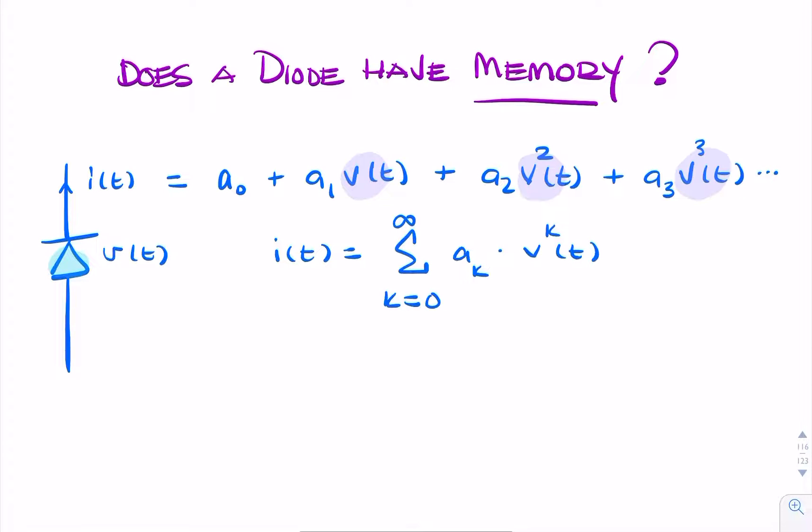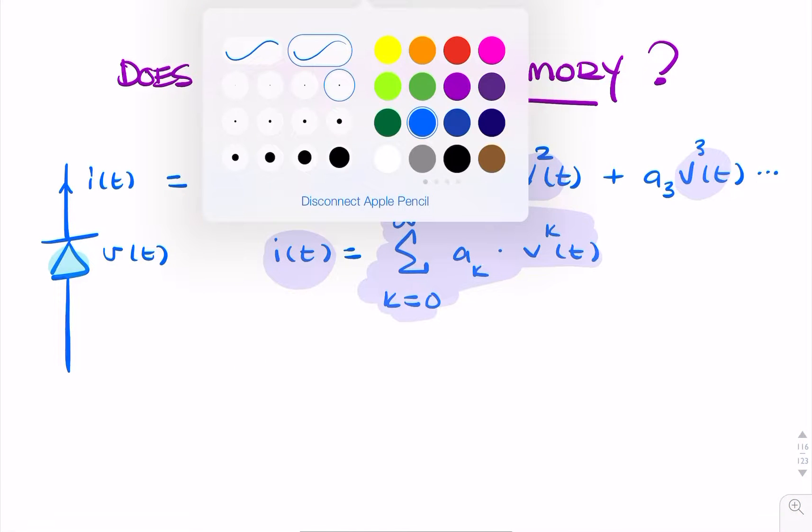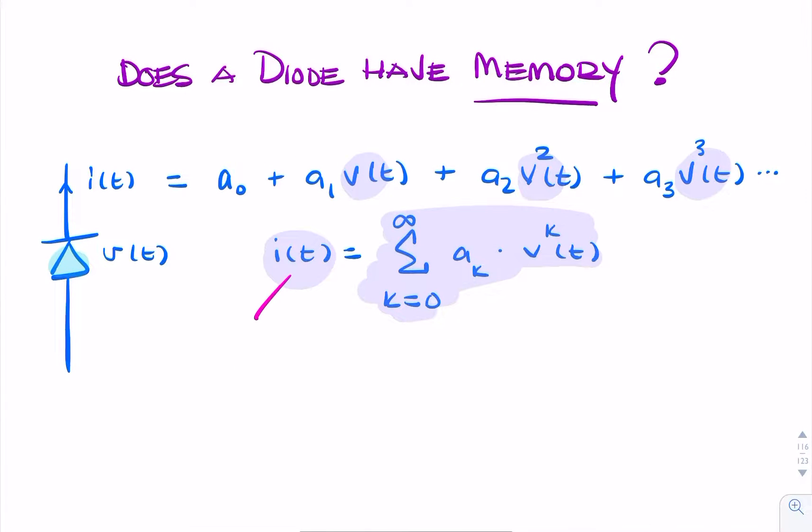And the question is, does this expression have memory? Now, remember, to have memory means the output here, this is the output, has to depend on the input at some point in the past or the future. So this is the output, and the potential difference is the input.